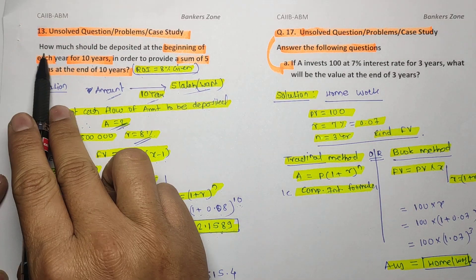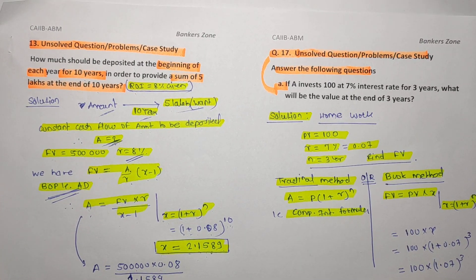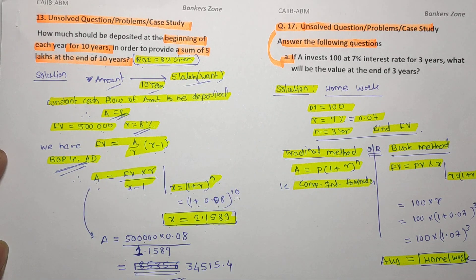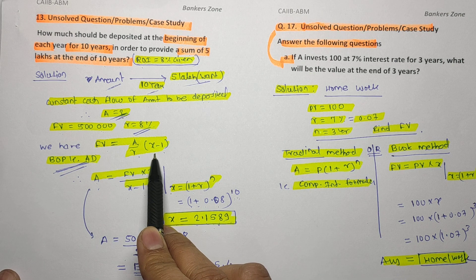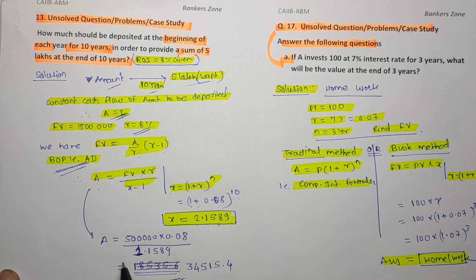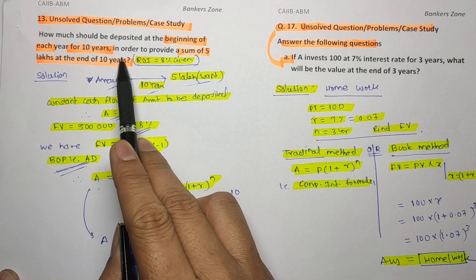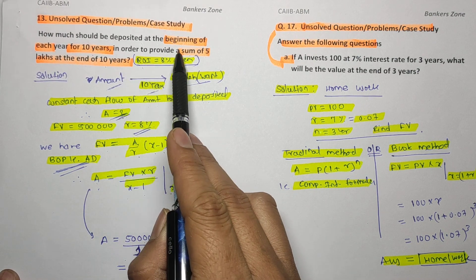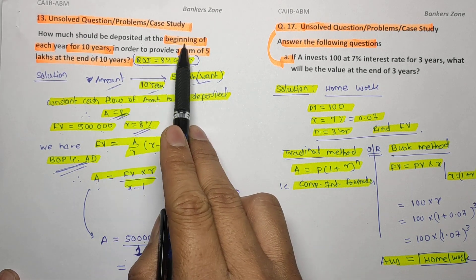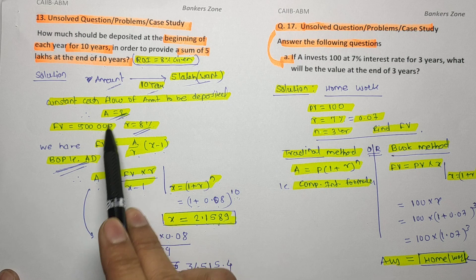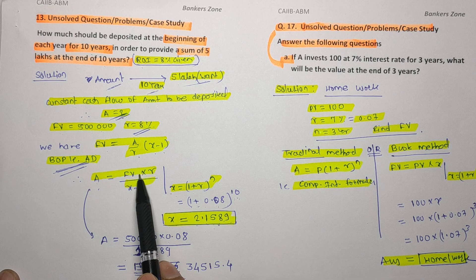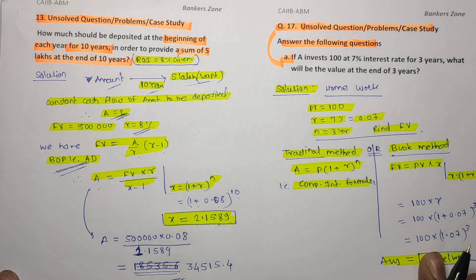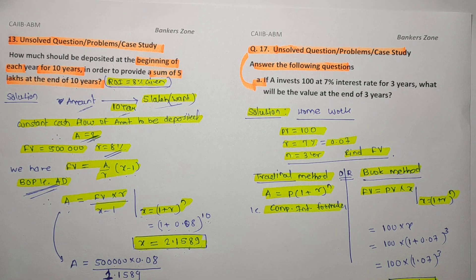We have completed numerical 13. The most important part is remembering the formulas. When the question asks how much amount to deposit at the beginning of each year, recognize it is a constant cash flow — it is annuity. Since future value is given, use the future value formula, rearrange, and calculate the annuity amount.